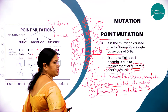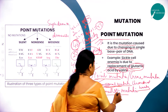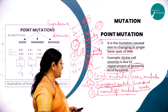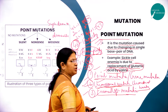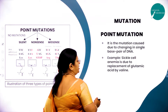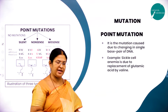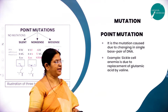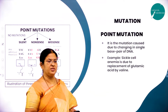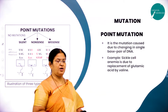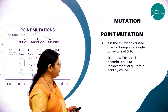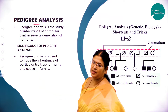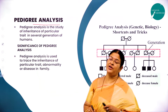Frame shift mutation also involves a change in the sequence of DNA. Such a type of mutation is called frame shift mutation. So the three types of mutation are: point mutation (also called gene mutation), chromosomal mutation, and frame shift mutation.